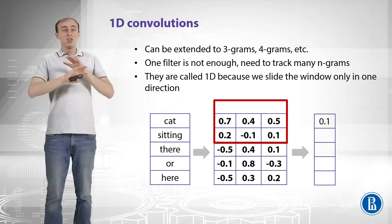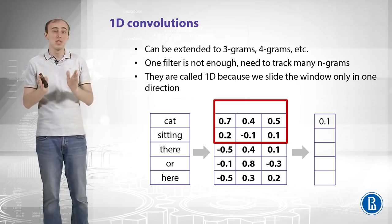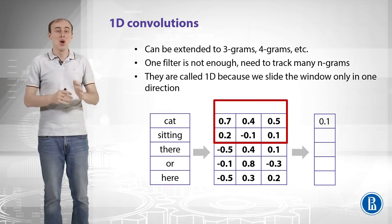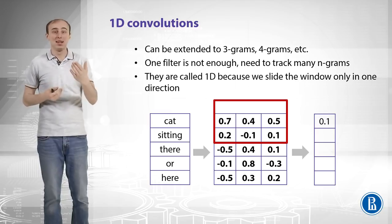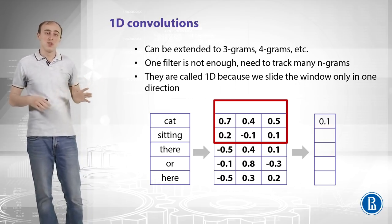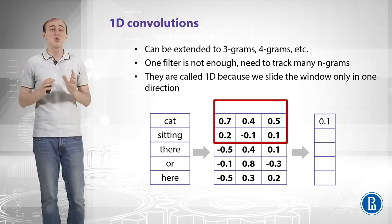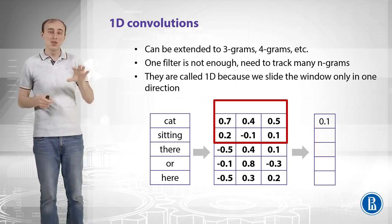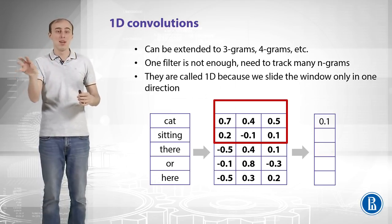This approach can easily be extended to 3-grams, 4-grams, and any other n-gram. Contrary to bag of words, your feature matrix won't explode — all you change is the size of the filter used for convolution. Just like in convolutional neural networks, one filter is not enough. You need to track many different meanings of those 2- or 3-grams, which is why you need many convolutional filters. These filters are called 1D convolutions because we slide the window in only one direction, contrary to images where we slide in two directions.